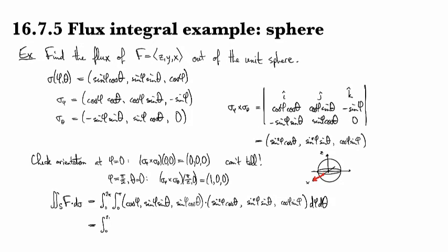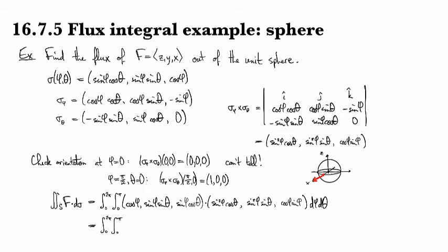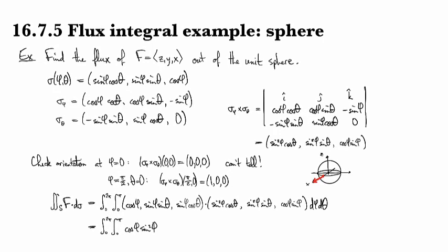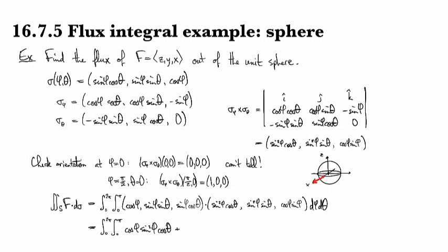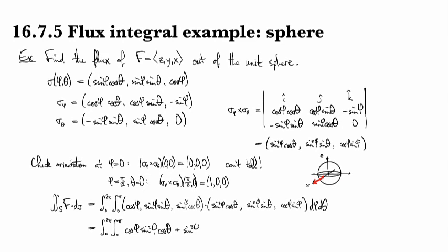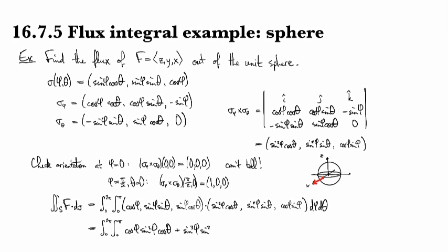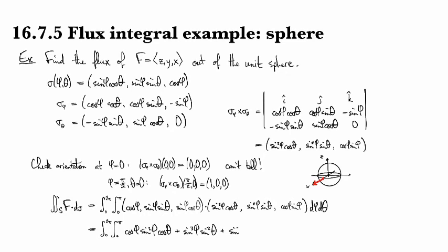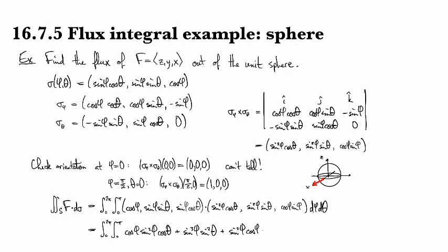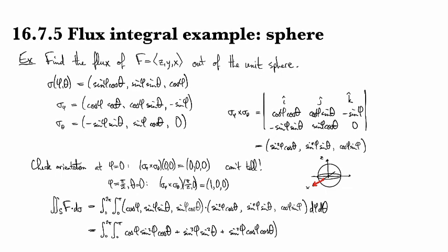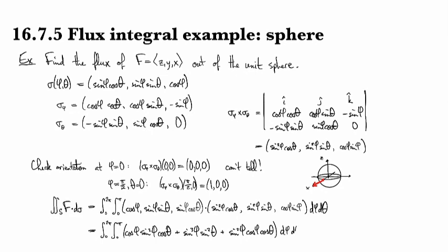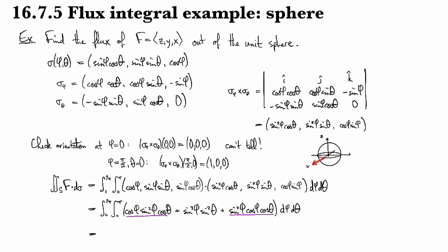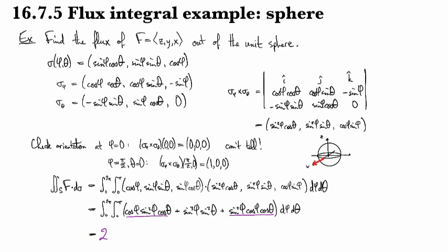So there it is, and then, so that's dφ dθ, and so now I've got to work out that stinking cross product, and it's going to be, so I've got a cosine φ sine squared φ cosine θ from the first term plus, and then I've got sine cubed φ sine squared θ, and then I've got sine squared φ cosine φ cosine θ, and that's all still dφ dθ. These guys are the same, so I can combine them with a 2.